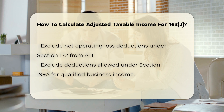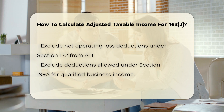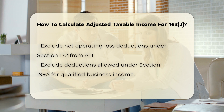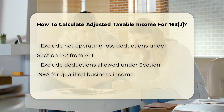Exclude Net Operating Loss Deductions. The amount of any net operating loss deduction under Section 172 is also excluded from the ATI calculation. This ensures that net operating losses do not affect the business interest deduction limitation.